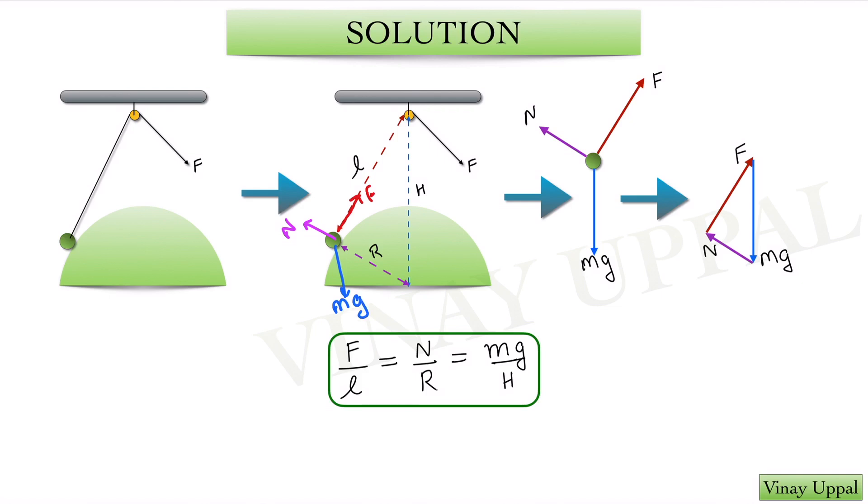So these are the three forces acting and the resultant force on this ball is 0. So this is the FBD that I have drawn.